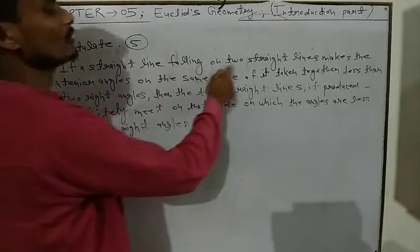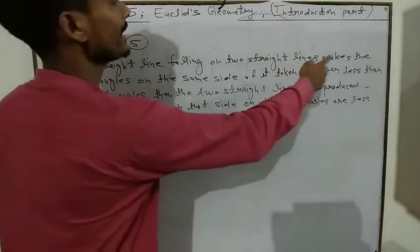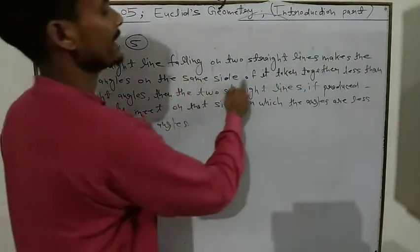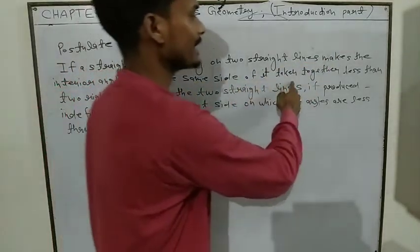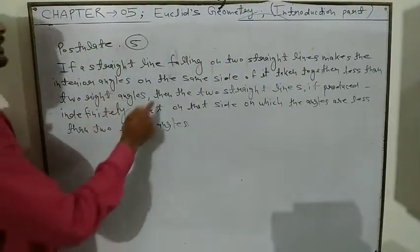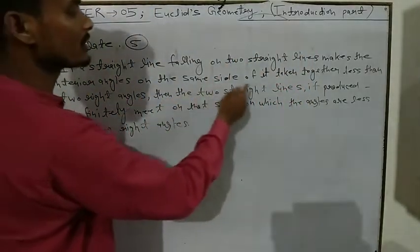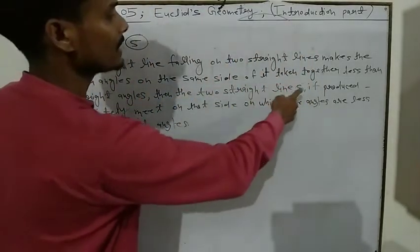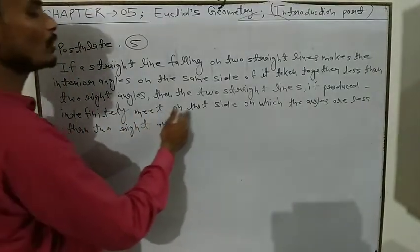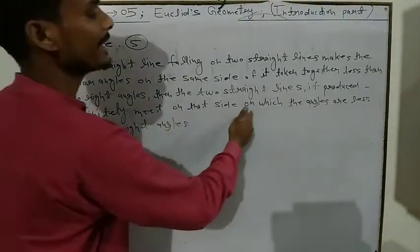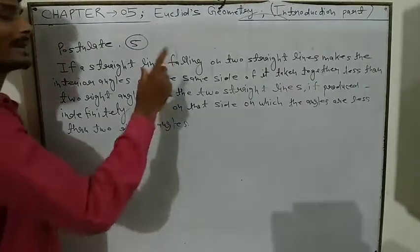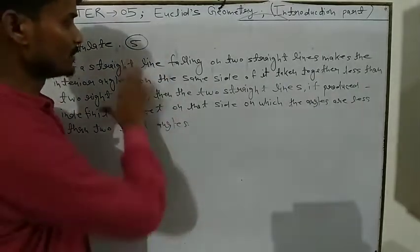If a straight line falling on two straight lines makes the interior angles on the same side of it taken together less than two right angles, then the two straight lines if produced indefinitely meet on that side on which the angles are less than two right angles.